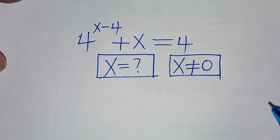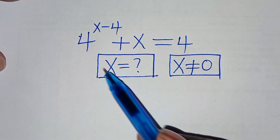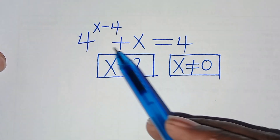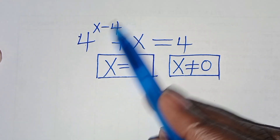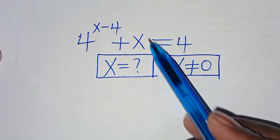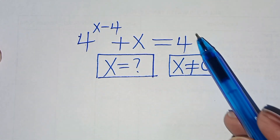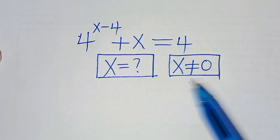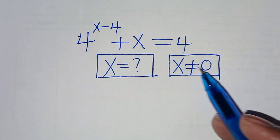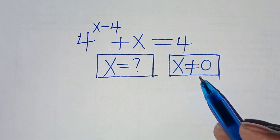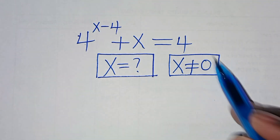Hello everyone, you are welcome to solve this nice algebra problem, which is 4 to the power of x minus 4, plus x, this is equal to 4. So what is the value of x, given that x is not equal to 0?